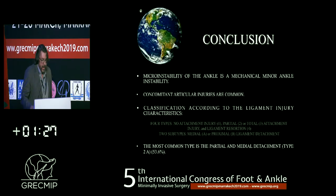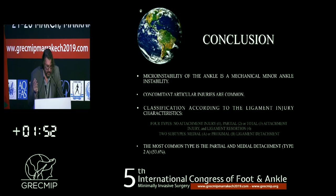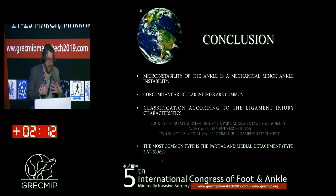In conclusion, micro-instability of the ankle is a mechanical or minor ankle instability, and as a mechanical instability it has concomitant intra-articular injuries, which are very common in patients with micro-instability. This classification is based on ligament injury characteristics. We classified it into 4 types: non-detachment injury, partial injury, total injury, and ligament resorption — with two subtypes depending on whether the detachment is medial or proximal. Remember that the most common type is the partial medial detachment, Type 2A, and more than half of patients have this kind of injury. Thank you for your attention.